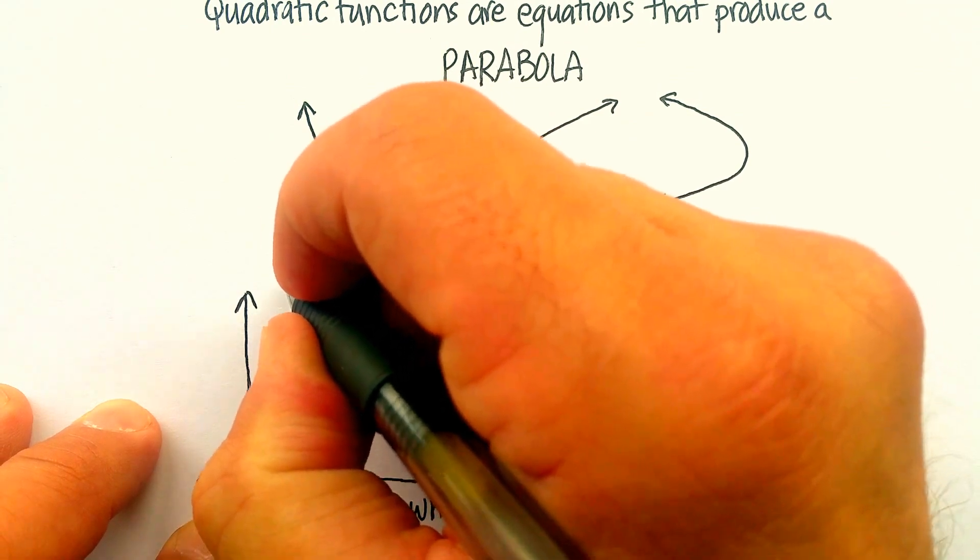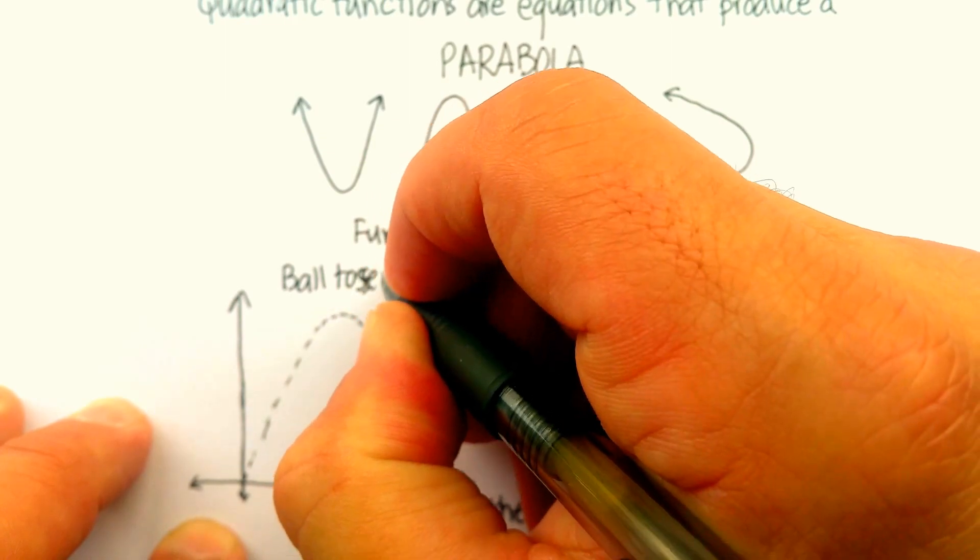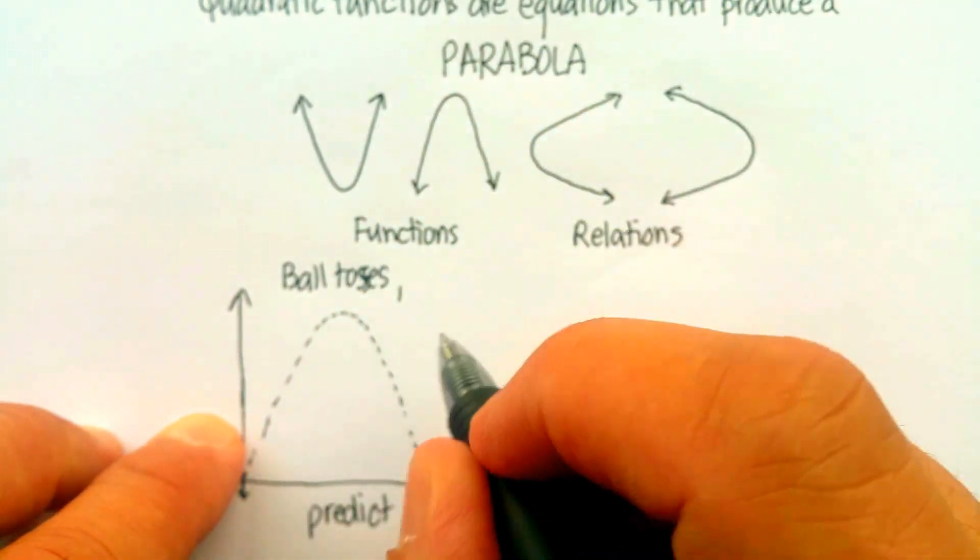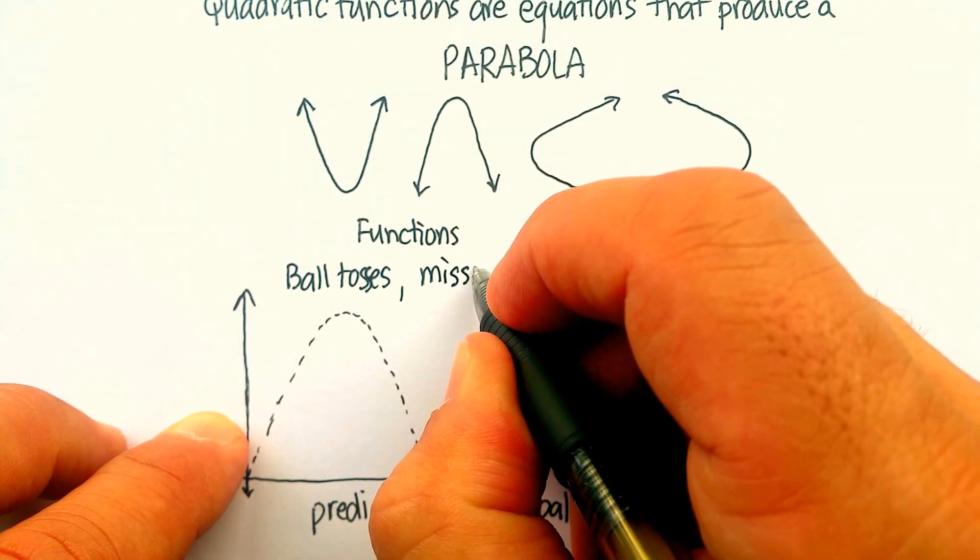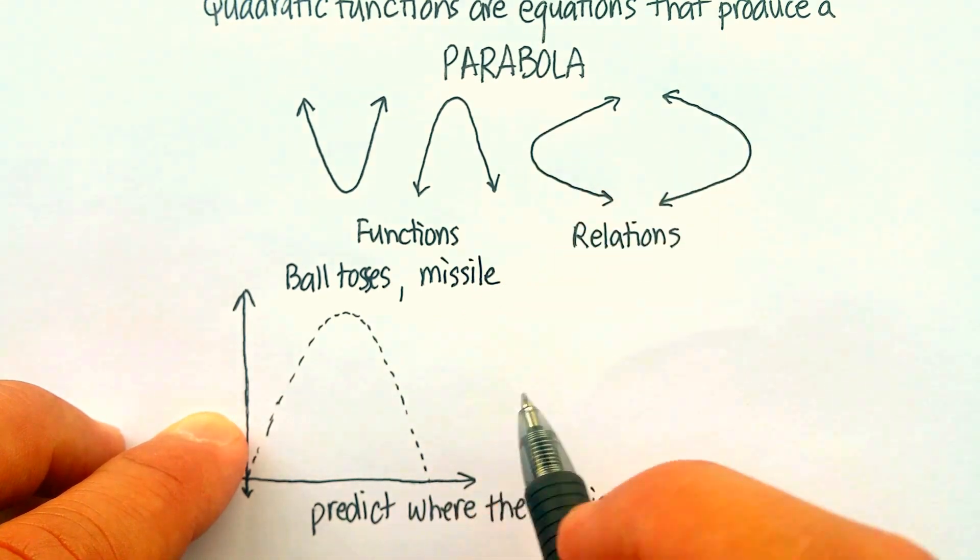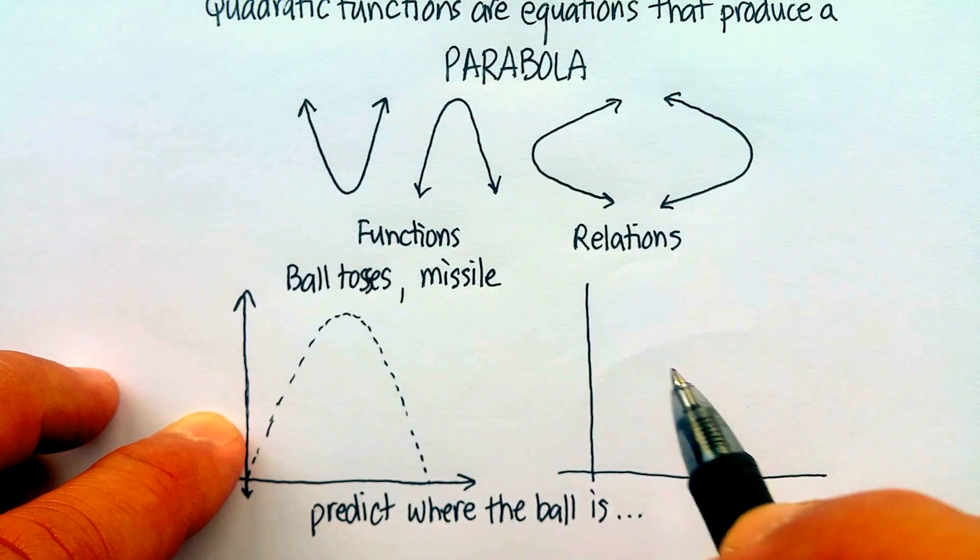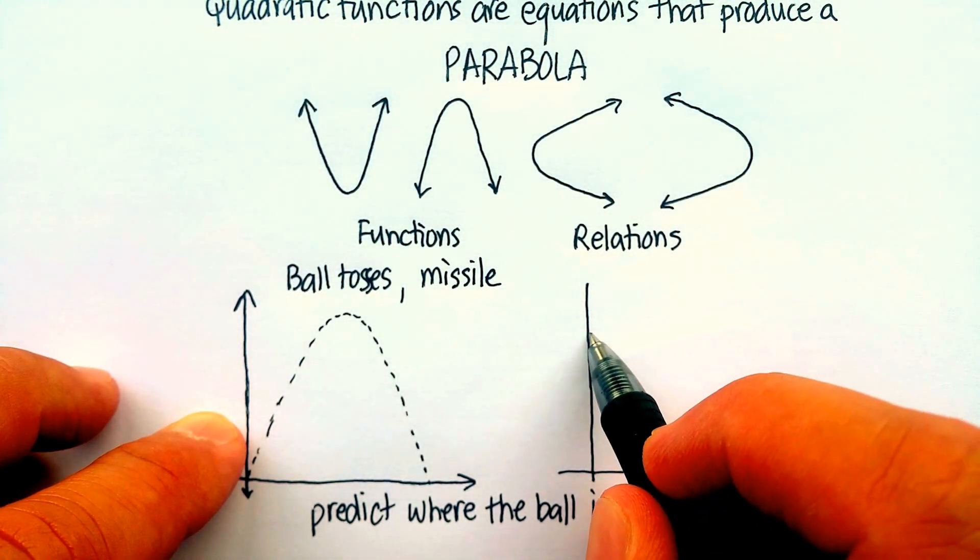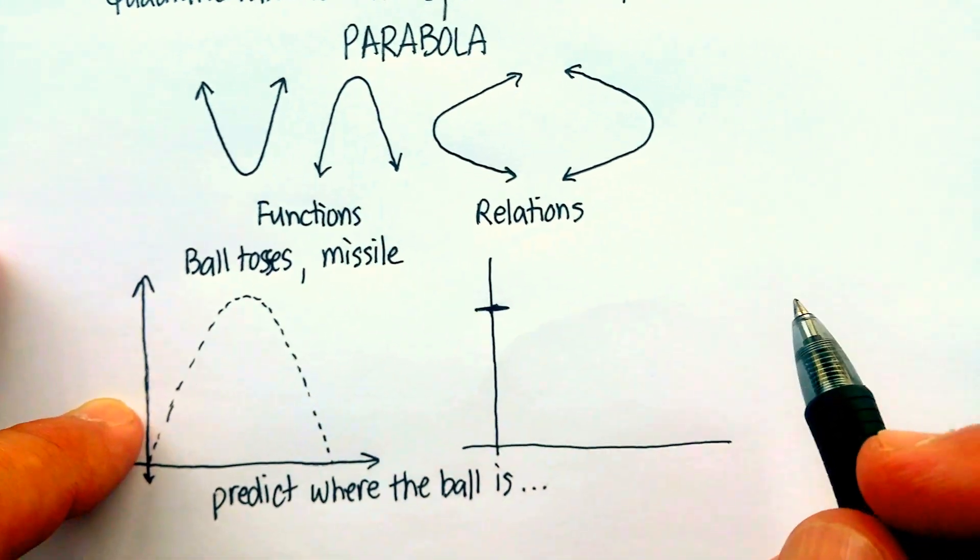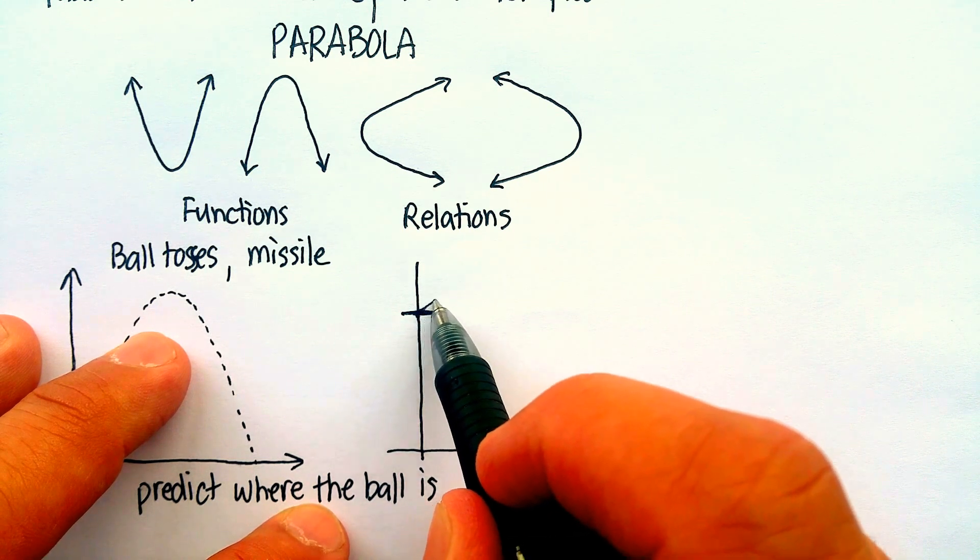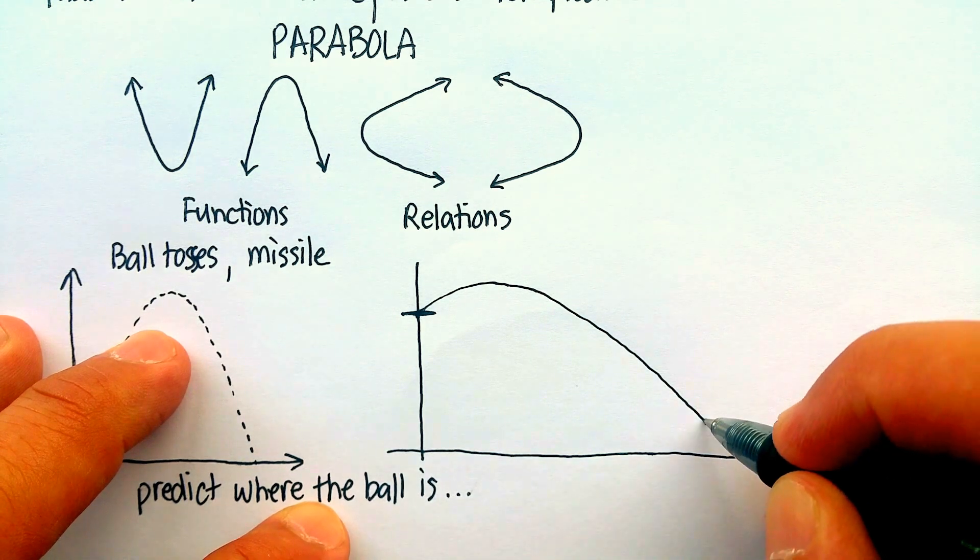But it's not only ball tosses. For example, if I were to do a missile projectile, I'll be able to say where that projectile might be. So if I were to be here, let's say I'm on the top of a building or a cliff, and I were to shoot a projectile, it would follow, again, the pathway of a parabola.